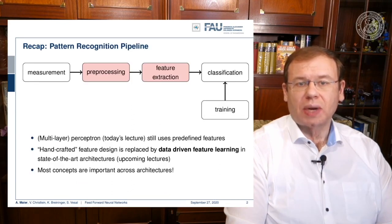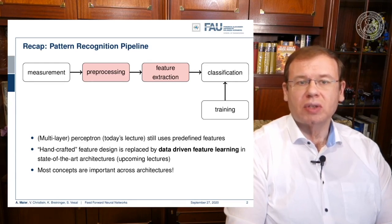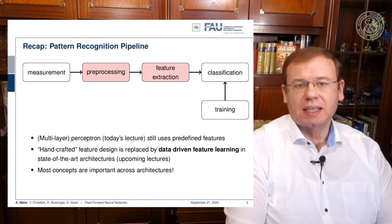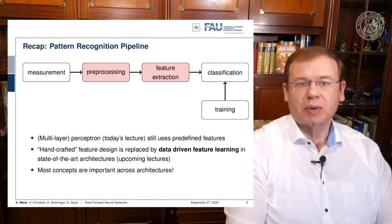If you look at classical pattern recognition and machine learning, we would still follow a so-called pattern recognition pipeline. We have some measurement that is converted and pre-processed in order to increase the quality. In the pre-processing, we essentially stay in the same domain as the input. So if you have an image as input, the output of the pre-processing will also be an image.